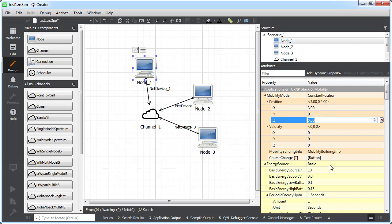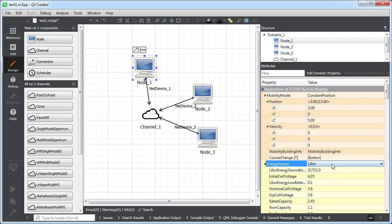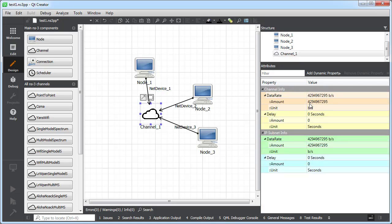I can also set the energy source. Those are read from the JSON configuration file. You can see here I have different options. For example, if I select lithium-ion battery, then I can set the different attributes for that model.